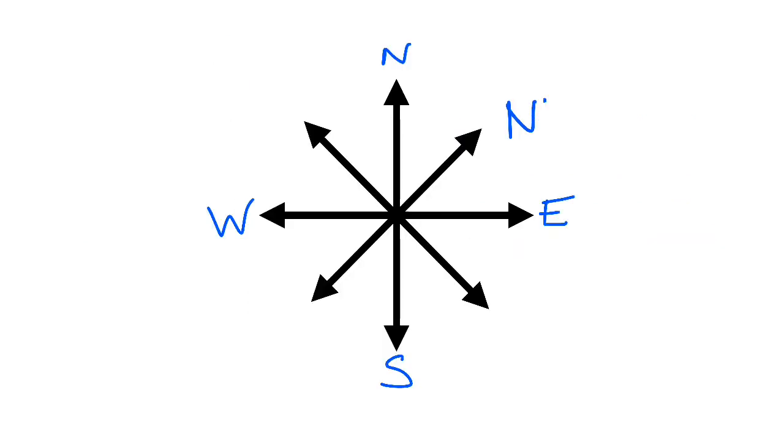In-between North and East there's North East. Then between South and East, there's Southeast. Then we have South and West, which is South-West. And in-between North and West, we have North-West.